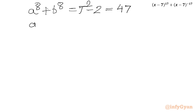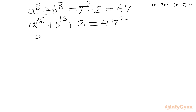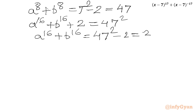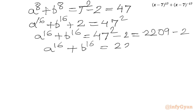Squaring once more: A¹⁶ + B¹⁶ + 2(A⁸·B⁸) = 47². Since AB = 1, (AB)⁸ = 1, so A¹⁶ + B¹⁶ = 47² - 2 = 2209 - 2 = 2207. This is a very important result.